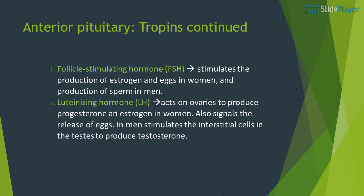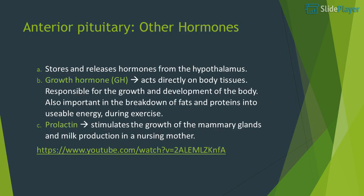Follicle stimulating hormone (FSH) stimulates the production of estrogen and eggs in women, and production of sperm in men. Luteinizing hormone (LH) acts on ovaries to produce progesterone and estrogen in women and also signals the release of eggs. In men, LH stimulates the interstitial cells in the testes to produce testosterone.